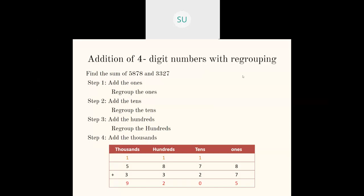Then we saw addition of four-digit numbers with regrouping. So what does regrouping mean? Whenever in any place you have a number which is greater than nine, or a two-digit number, you regroup them to the next place. Similarly, when they've given you two numbers to add, you first write them in columns in their place values in vertical columns. The numbers here are 5878 and 3327. When you write them in columns you get: eight in ones, seven in tens, eight in hundreds, and five in thousands.